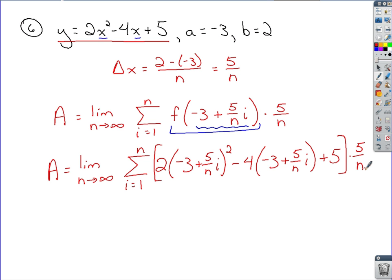Okay, it's algebra time. Some scratch work I might want to do off the side would be the expansion of that binomial. So if I expand that binomial out, we've got negative 3 plus 5 over n i times itself.